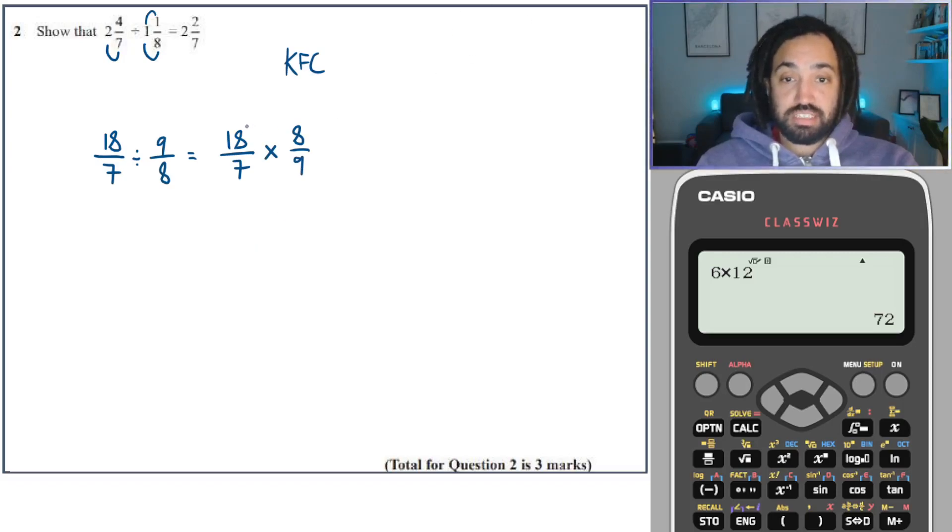I'm going to look for those common factors again. And I can see that 18 and 9 are both divisible by 9. So that leaves me with 2. And that leaves me with 1 when I divide through by 9. So now I can multiply the top and top to make 16. And the bottom and the bottom to make 7.